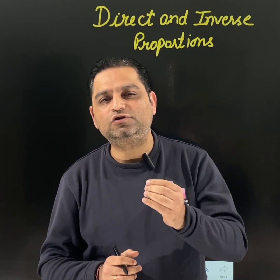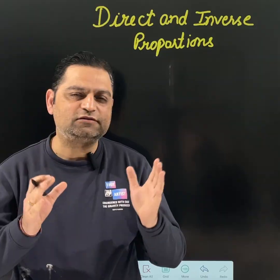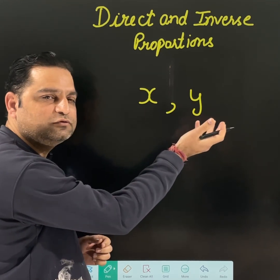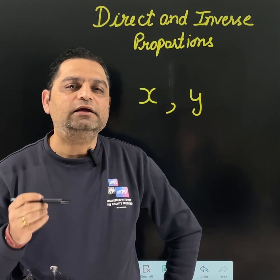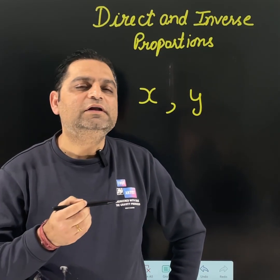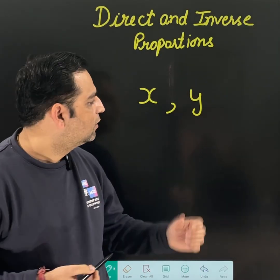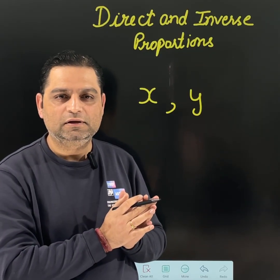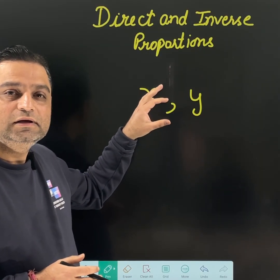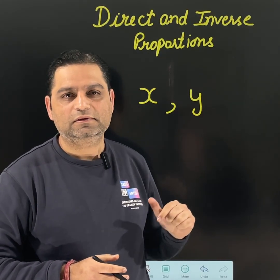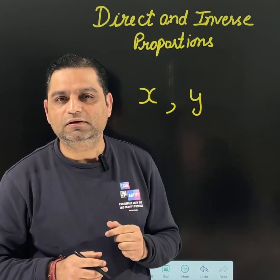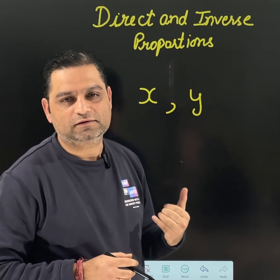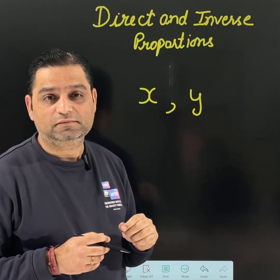In this topic, always two quantities will be involved. I am considering two quantities x and y. Everybody must be clear about what proportionality is. Two quantities or two variables are there — if changing the value of one is impacting the value of the other, that means they are proportional. If I am changing the value of x and y is also changed according to that, they are proportional, they are related to each other.